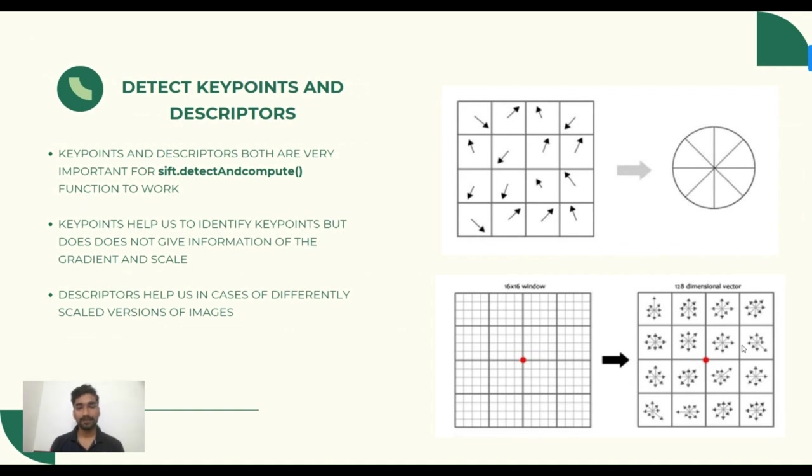Key point detection and descriptor extraction are fundamental steps in image processing and computer vision. Key points represent unique features in an image, while descriptors capture their distinctive characteristics. Key points should be distinctive, scale invariant, rotationally invariant, and affine invariant. Descriptors should be distinctive, compact, and noise tolerant. The choice of algorithm depends on the application and desired performance.